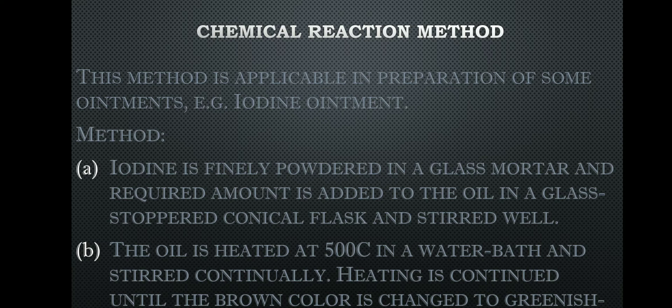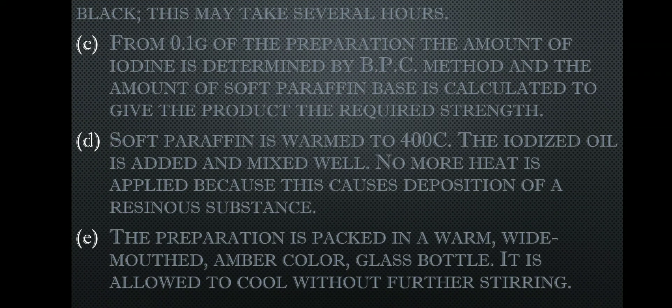You need to heat the iodine and oil mixture to about 500°C — not directly over a flame, but in a water bath — while continuously stirring so that iodine and oil react with each other. You heat until the brown color changes to a greenish-black color, indicating that the oil ingredients have reacted with iodine through the application of heat, forming iodized oil.